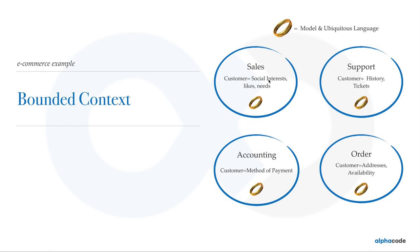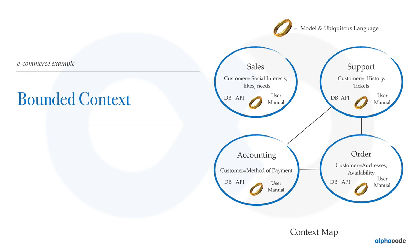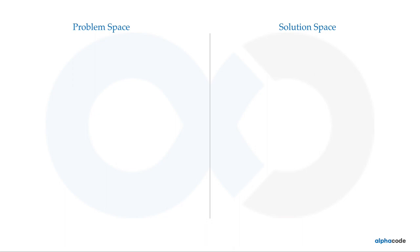Within the sales context, everyone in that team should be able to understand the discussion. Each of these contexts will have their own database, own API, and own user manual, and they will all conform to the domain model developed for that context. When you draw the relationships among bounded contexts on paper, that is known as the context map — showing how these contexts interact with each other.